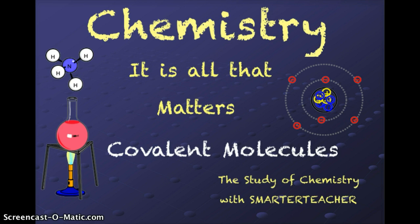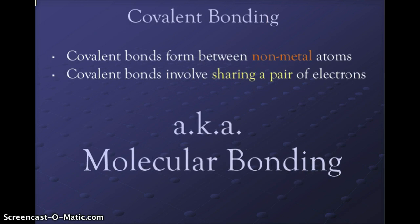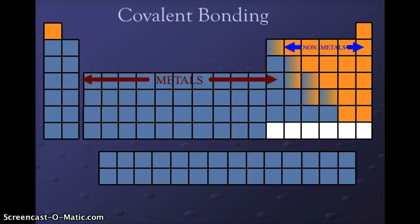In covalent bonding, we are dealing with bonds that are forming between two or more nonmetal atoms. These atoms will bond covalently by sharing pairs of electrons in order to complete their outer orbits. We are looking for the rule of octet to become stable, similar to our noble gases. This type of bonding is also known as molecular bonding.